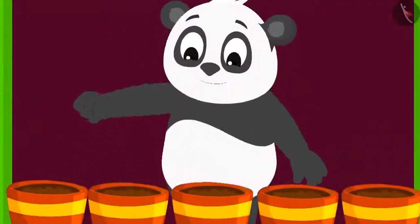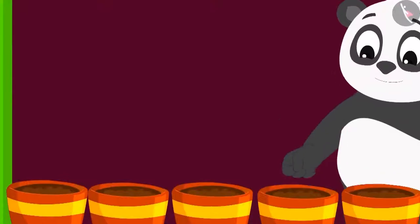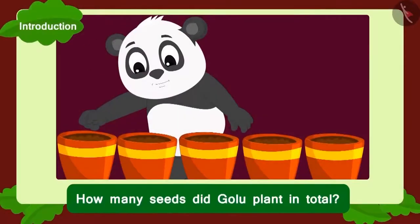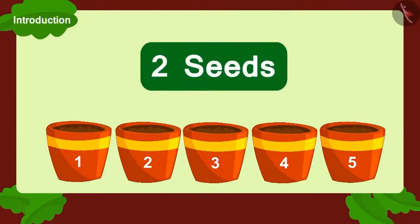Golu planted two seeds each in five pots. Can you tell how many seeds did Golu plant? In all, Golu planted seeds in five pots, and how many seeds did he plant in each pot? Two seeds. Let's find out the total number of seeds by adding them.